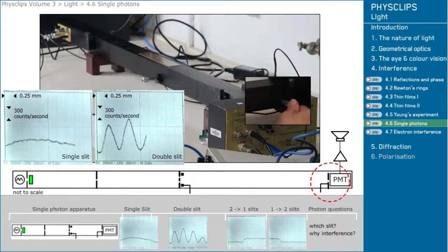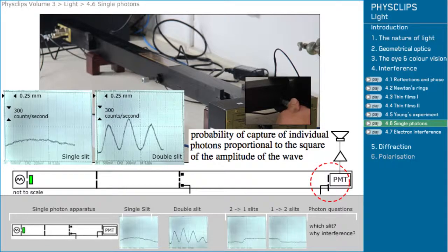The oscilloscope shows a histogram of photon capture and it's a classic Young's experiment pattern. The two slit interference pattern for intensity predicts the probability of capture of individual photons.